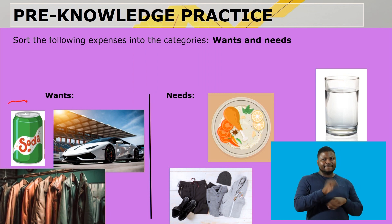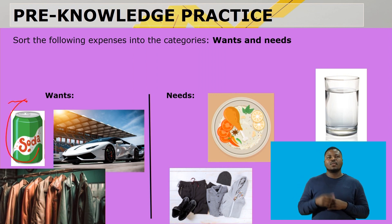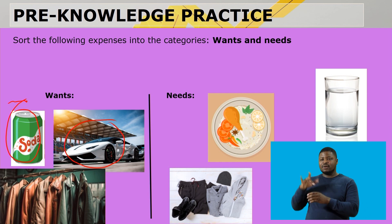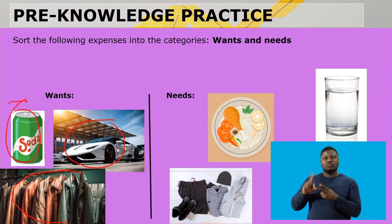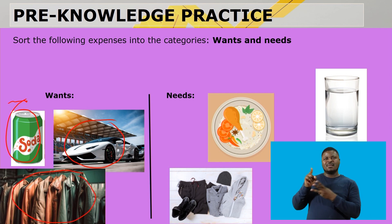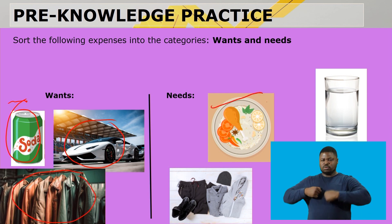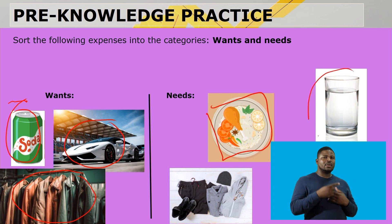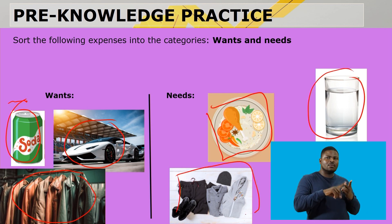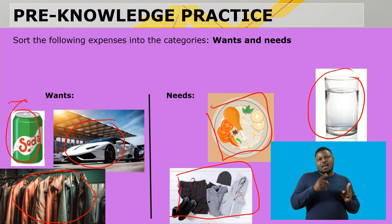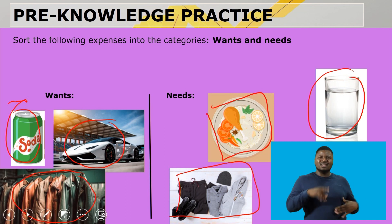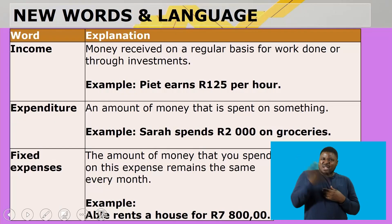What do we have with wants? Soda, flashy car, and genuine leather jackets. Needs: normal food, water, and normal clothing — not labels and all those stuff.